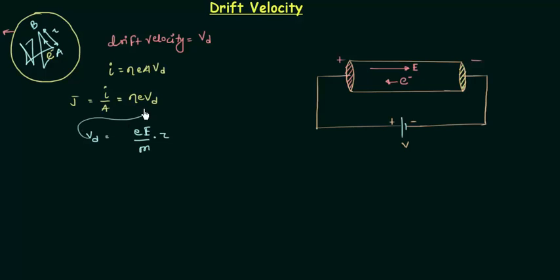So I will put this Vd here and let's see what we are having. J equals to N e square capital E by m into tau. Now I will rearrange this thing a little bit: N e square tau by m into E.